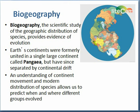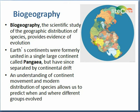The final source of data is biogeography — the scientific study of the geographic distribution of species — and this is also used to provide evidence of evolution. The theory of Pangaea holds that the Earth's continents were formerly united in a single large continent, but since that time these continents separated by continental drift. By understanding this continental movement, we can see a relationship between the movement of continents and the modern distribution of species, which allows us to predict when and where different groups evolved based on their geographic relationships.